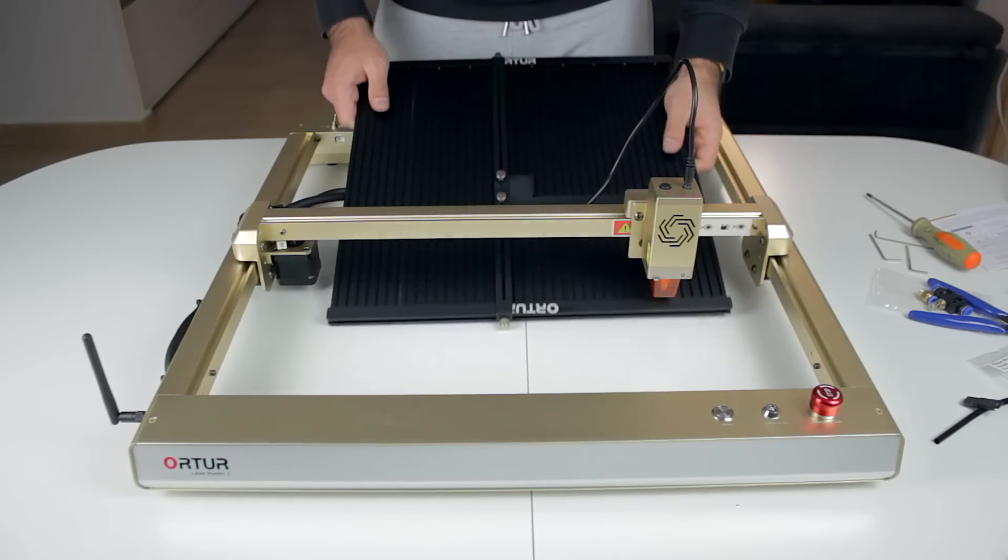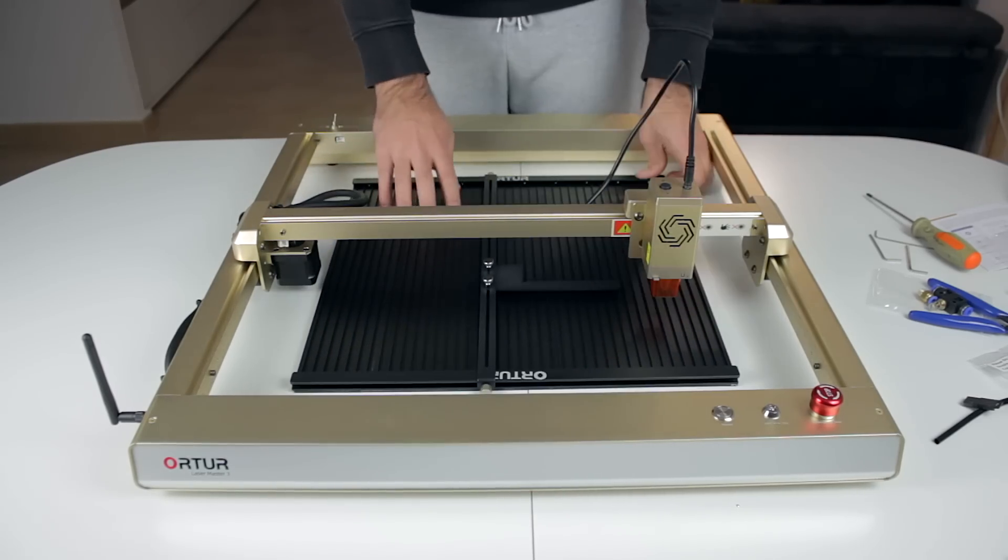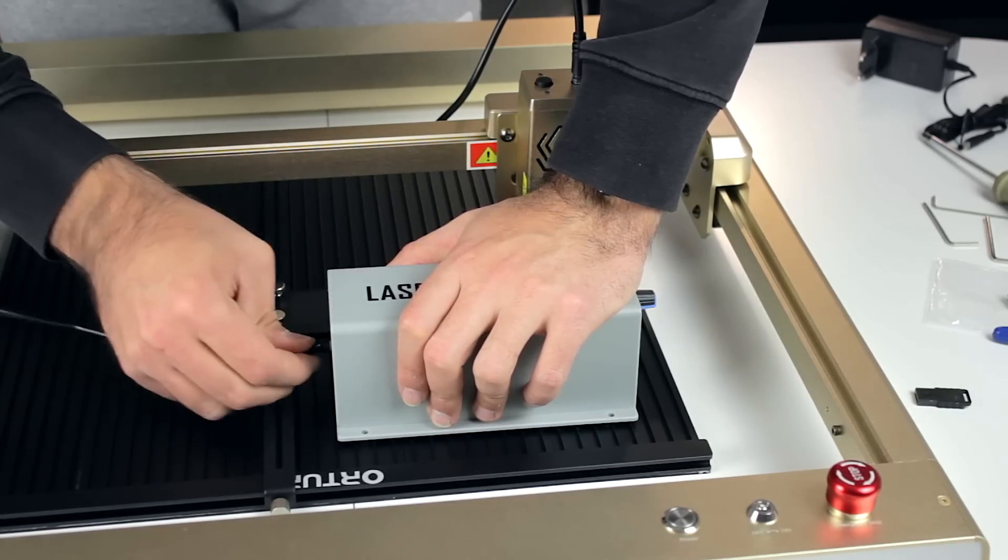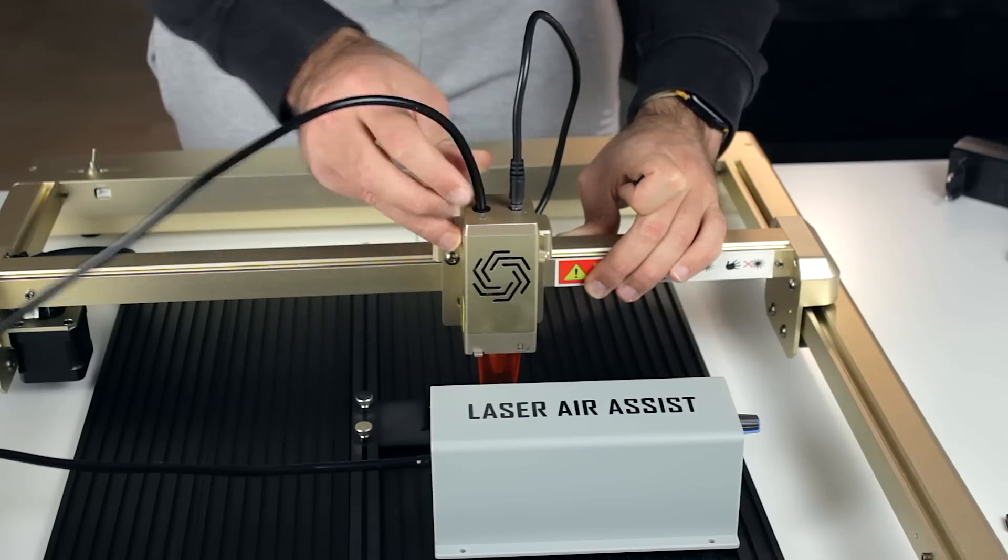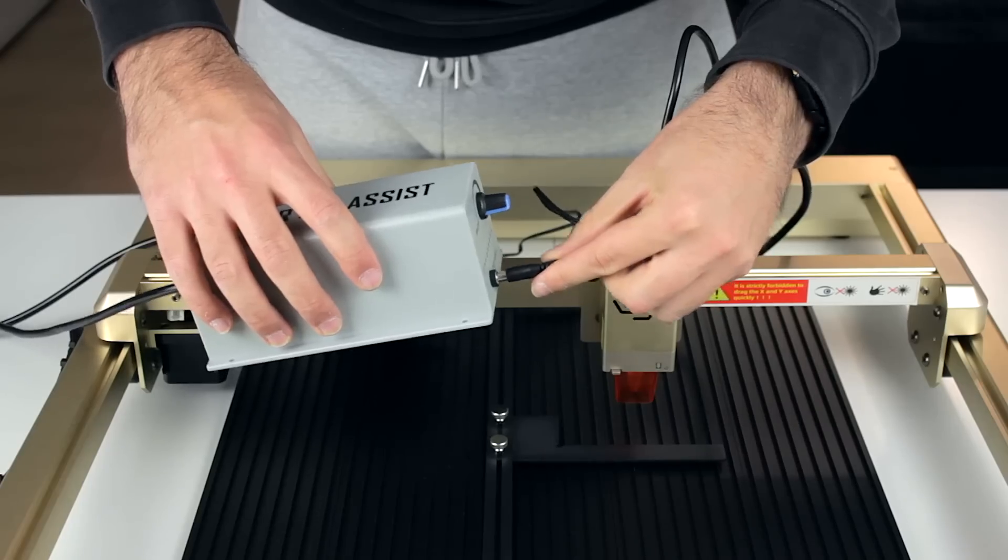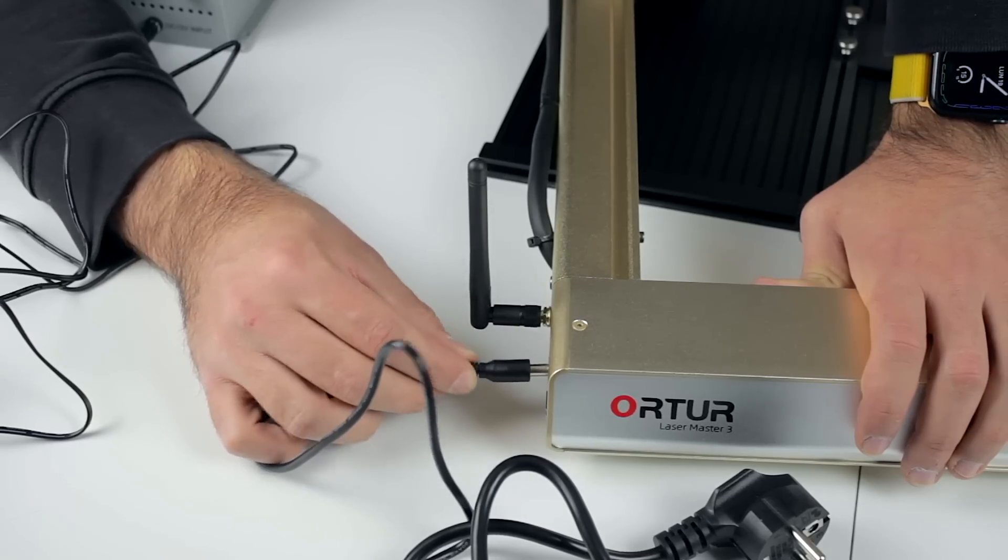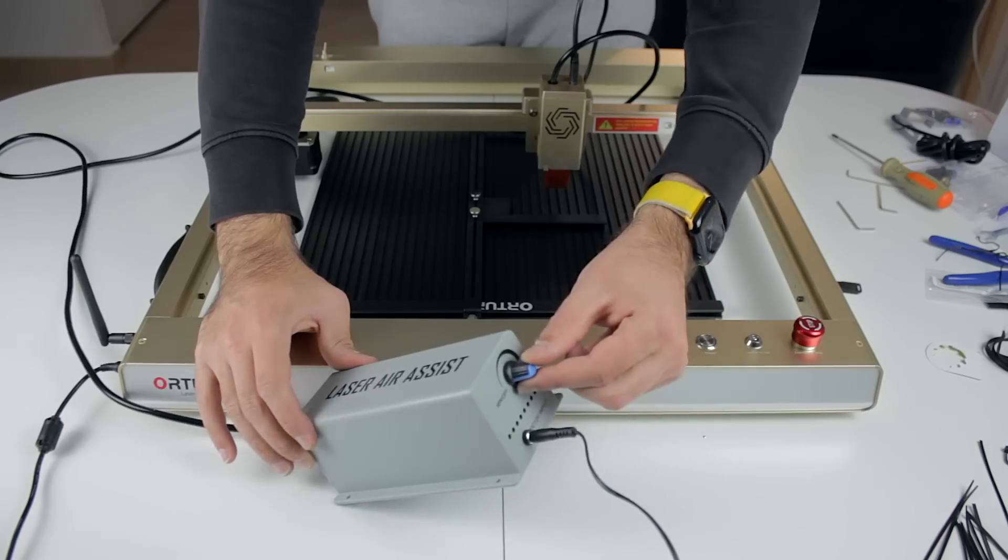Now we're going to bring back all the components we assembled at the beginning of the video and make our first tests. Here we have the laser engraving platform that will go right here, and the air pump assist that I'm going to connect with the air pipe to this end and the other end of the laser head. We'll now connect the power supply to the air pump, as well as the one for the laser that goes right here at the front side of the machine.